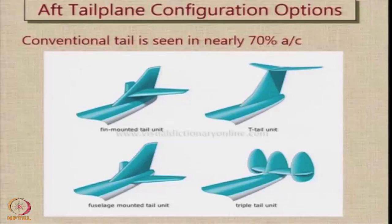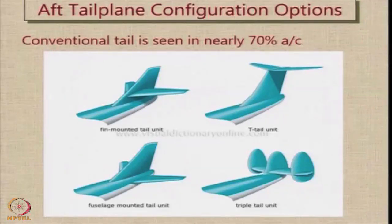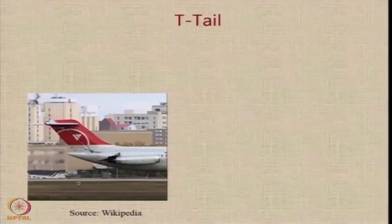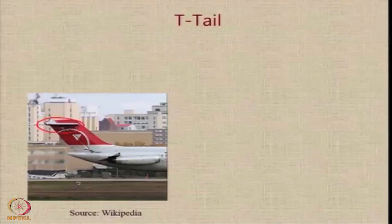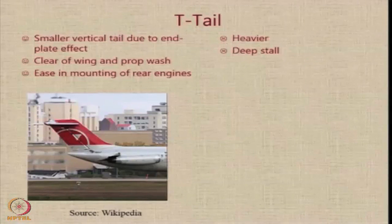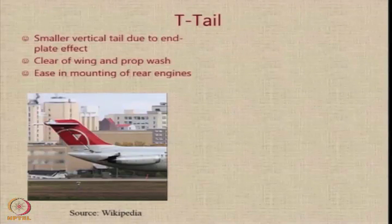We will now look at some unconventional tail configurations. The first is the T-tail. In a T-tail, you essentially move the horizontal tail vertically upwards — the horizontal tail is mounted at the top of the vertical tail. Because you have something at the end of the vertical tail, it creates an end plate effect, which gives you a more effective vertical tail, so maybe you can reduce its size. Secondly, the horizontal tail has moved away from the center of the fuselage, so it is away from the propwash and wing downwash during normal flights at reasonably low angle of attack.